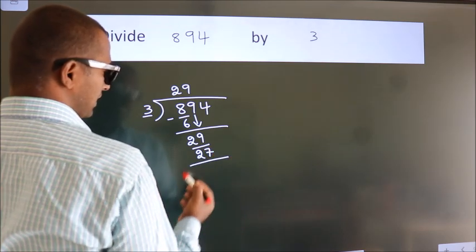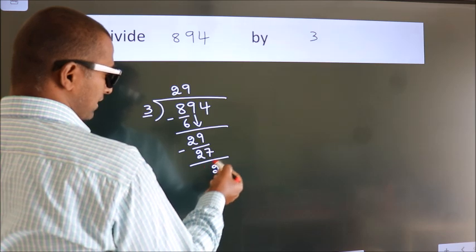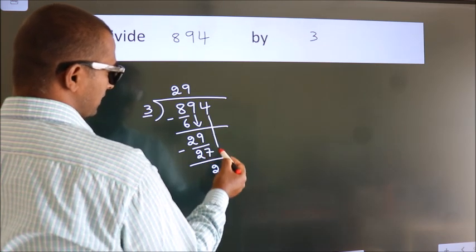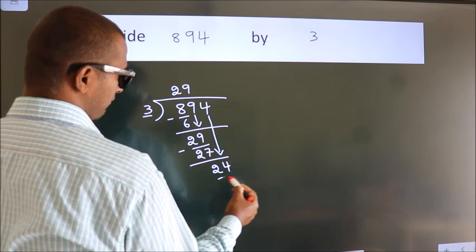Now we subtract. We get 2. After this, bring down the beside number. So 4 down. So 24.